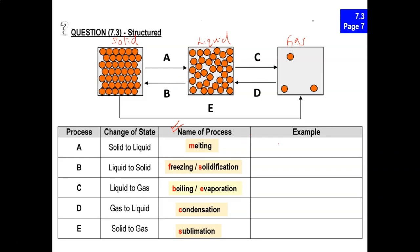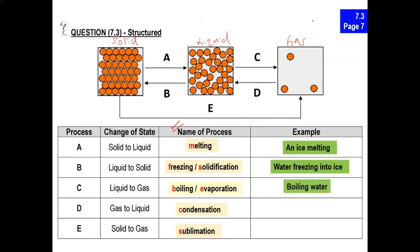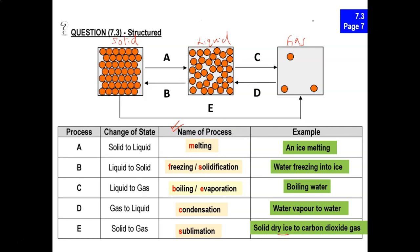Let's check your answers. From solid to liquid, we have ice that's melting. Liquid to solid: water freezing to ice. Liquid to gas: boiling. Gas to liquid: water vapor to water. Solid to gas — remember the video — dry ice. Dry ice becomes a gas directly, and the gas we get is carbon dioxide gas.